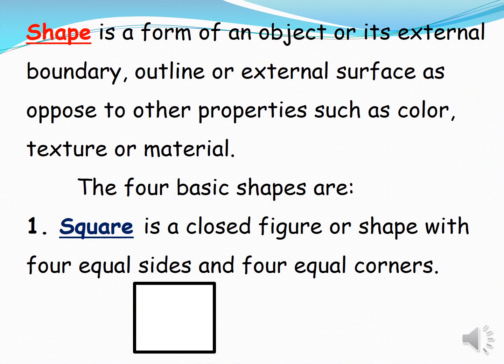Shape is a form of an object or its external boundary, outline, or external surface, as opposed to other properties such as color, texture, or material. The four basic shapes are: